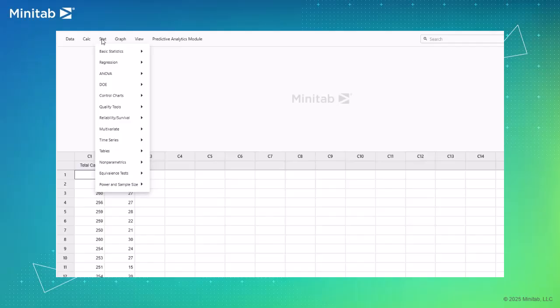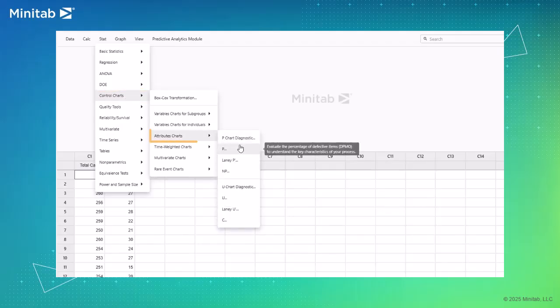To create a P-Chart in Minitab's statistical software, choose Stat, Control Charts, Attributes Charts, P.